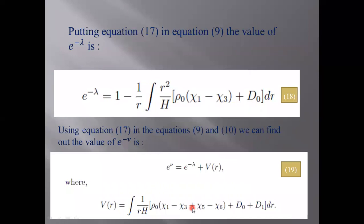Then putting the value of equation 17 in equation 9, which is our first modified equation, we get equation 18. Similarly, putting equation 17 in equations 9 and 10, which are the first two modified field equations, we get equation 19.